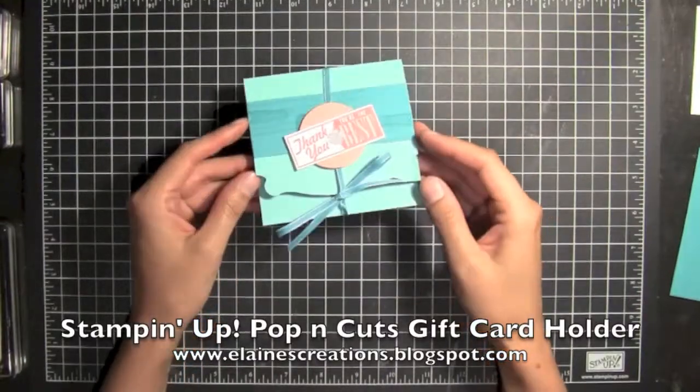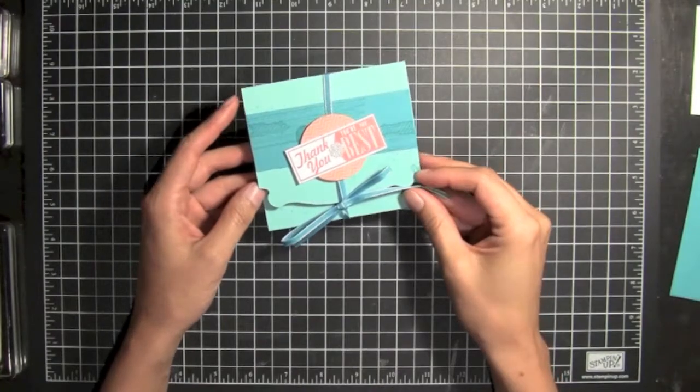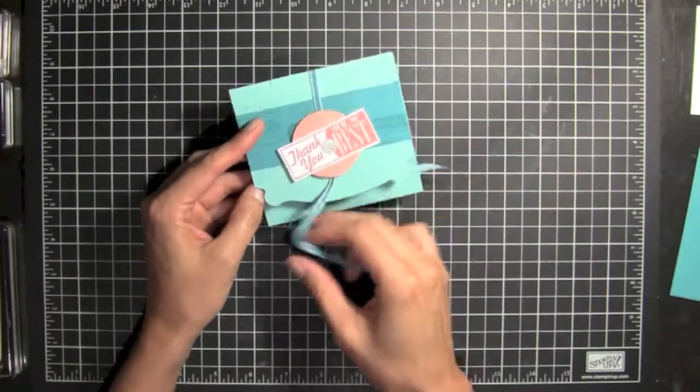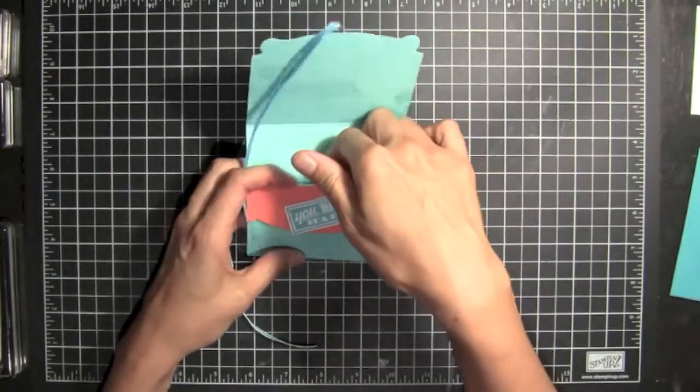In this video, I'm going to show you how to make this cute gift card holder using the Pop'n'Cuts die. You open it up, and inside you've got a little pocket to put a gift card in right here.